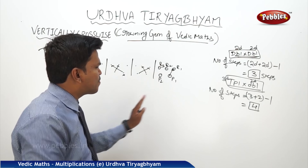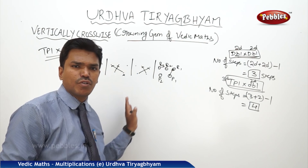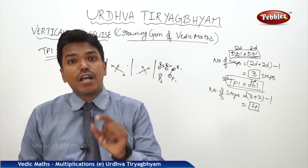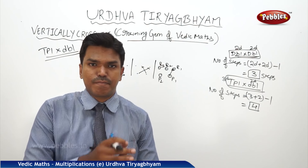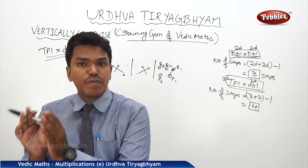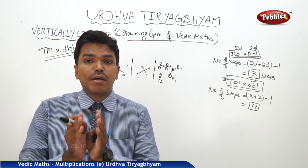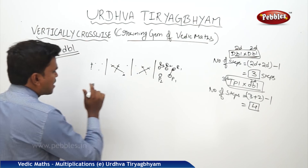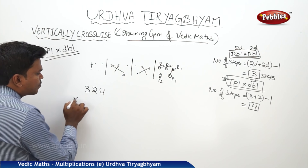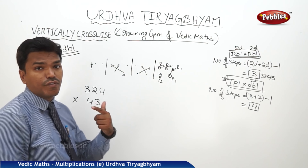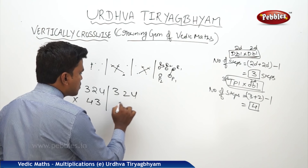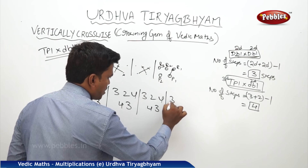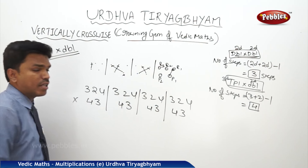These steps indicate with which numbers you have to multiply in each step — they represent the multiplication order of the digits. Let us take an example: 324 × 43. This involves 4 steps.